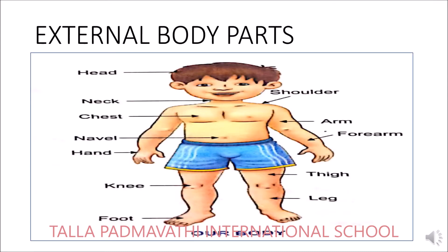Now let's look at the external body parts. The 12 external body parts are: head, neck, chest, navel, hand, knee, foot, shoulder, arm, forearm, thigh, and leg. So here in this picture we have 12 body parts, and we are going to learn and see the pictures of these 12 body parts.